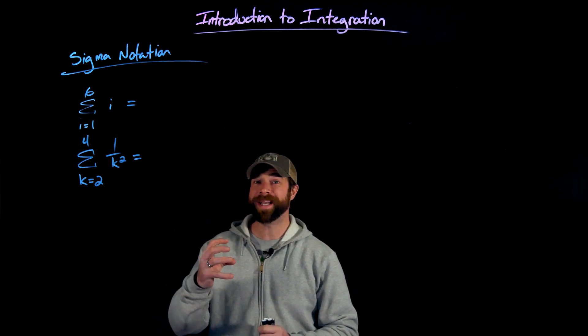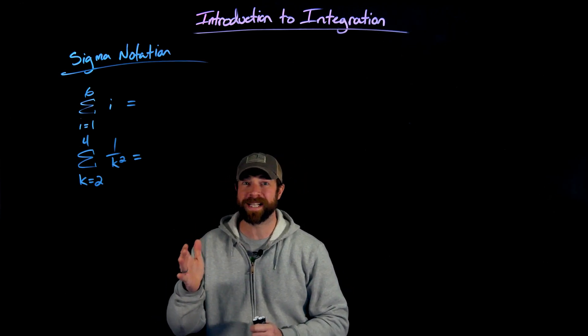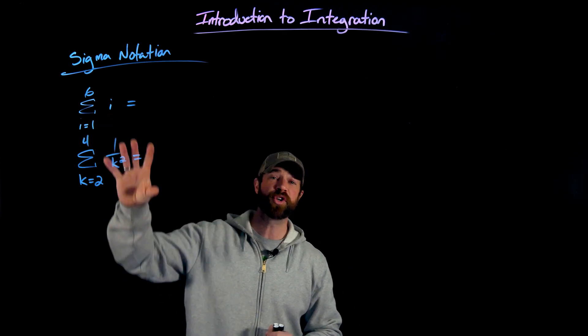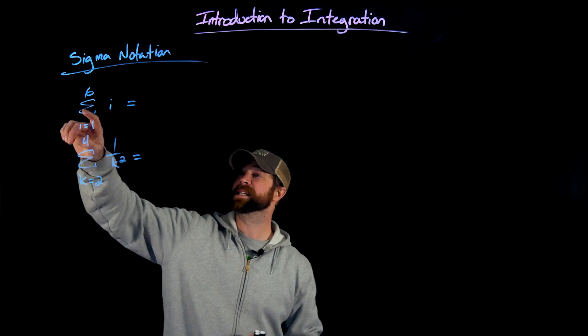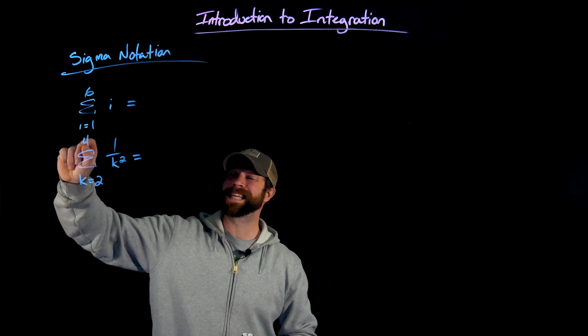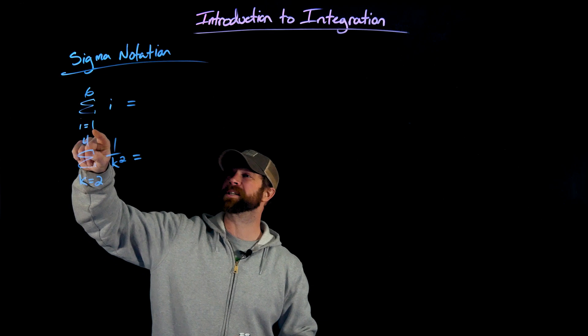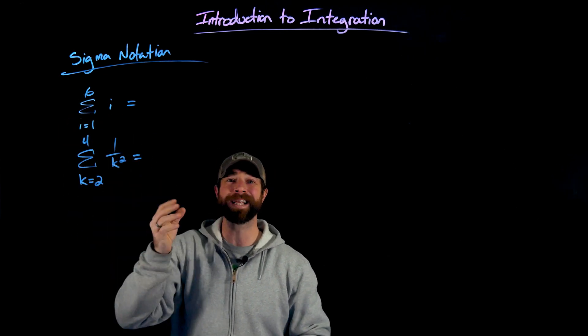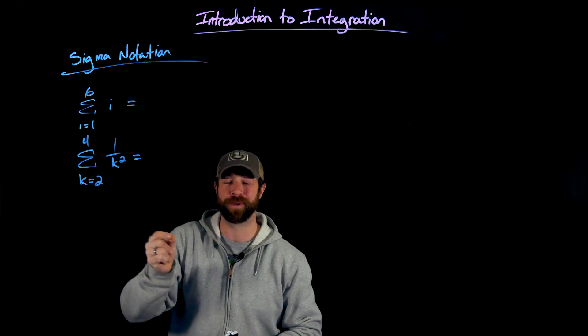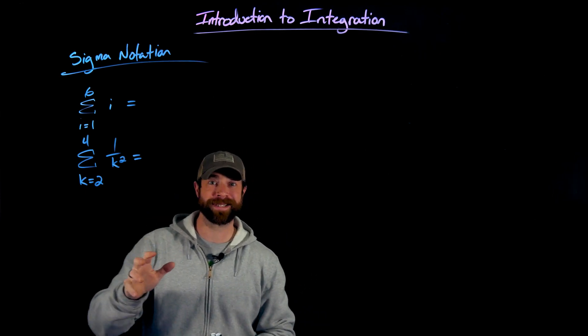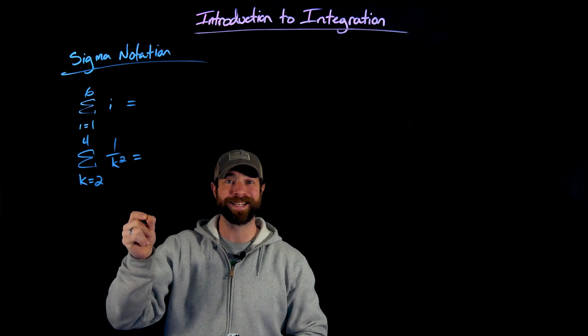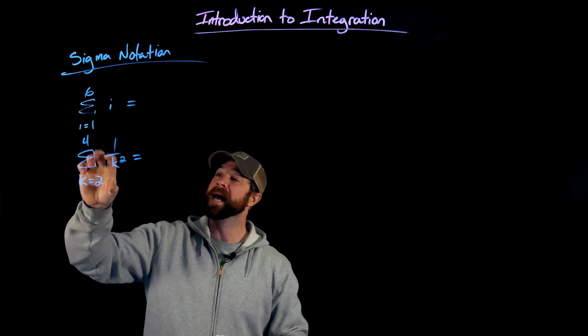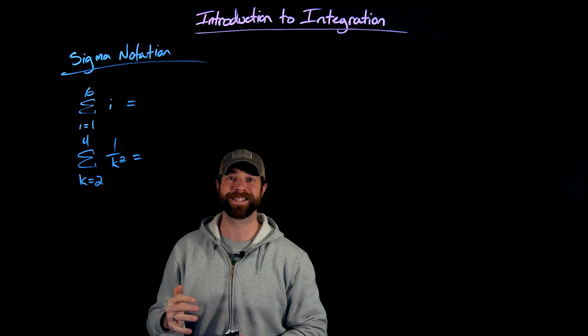Sigma notation is a quick, concise way of just discussing a series of terms being added together. In this case right here, I have two sigma statements. In this case right here, I'm going to have a sigma statement that my i or my iteration variable is going to start from one and go to six. This right here is the definition of each term. In the second example, you see I'm a little bit different. I'm using k as my iteration variable. It will start at two and it goes to four and my definition for each term is one over k squared.